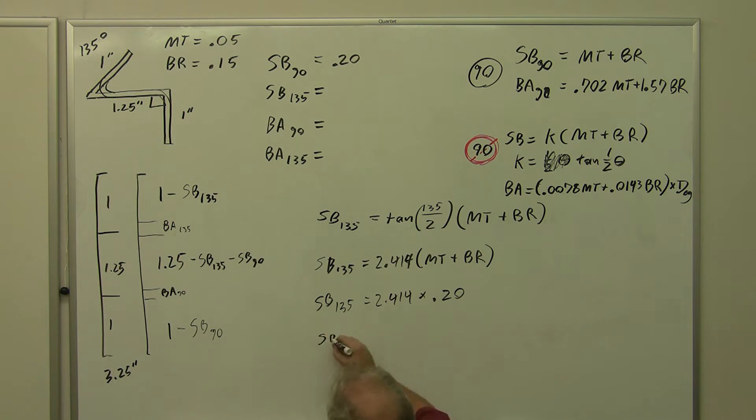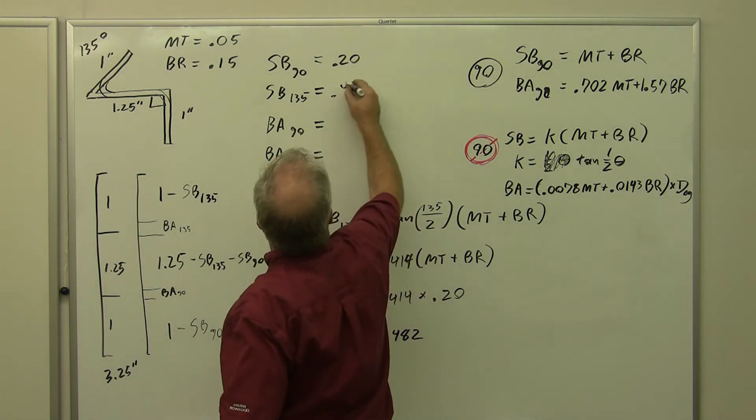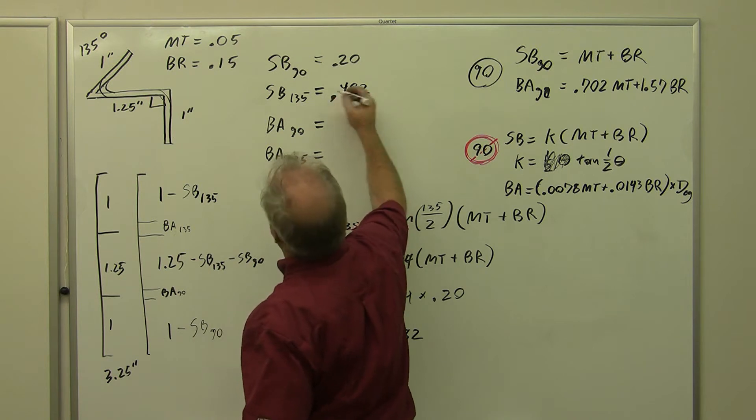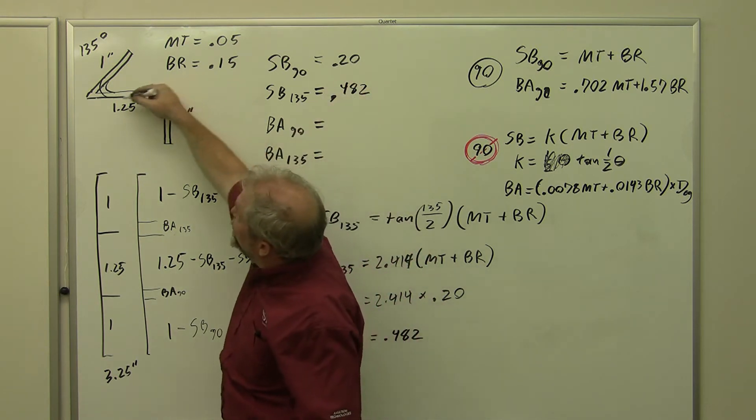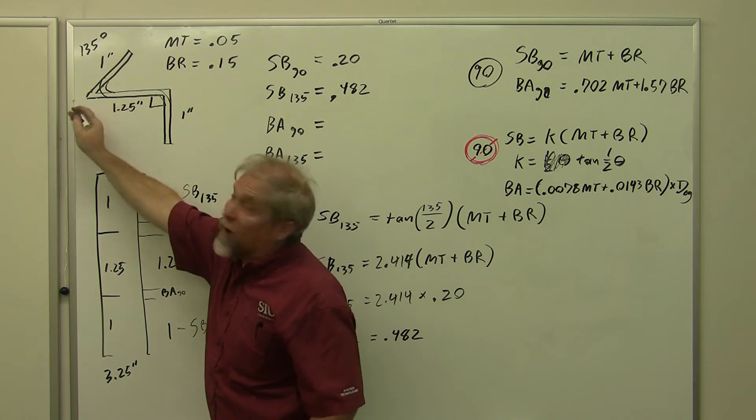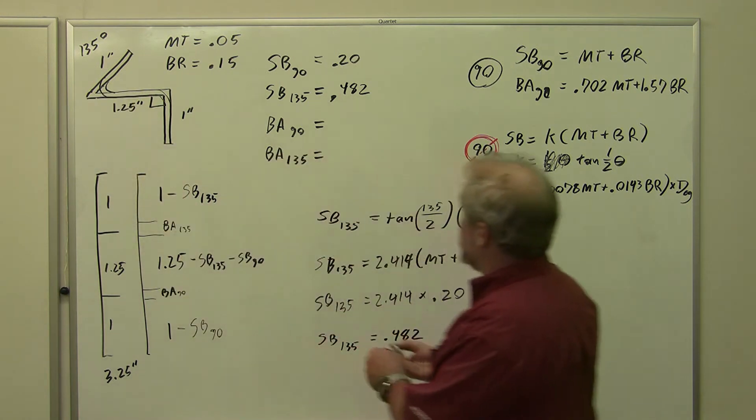That's a pretty big setback. Setback 135 equals 0.482, that's more than twice the setback of this one. But when you look at this, that's realistic because that juts so far out it gets trimmed off.